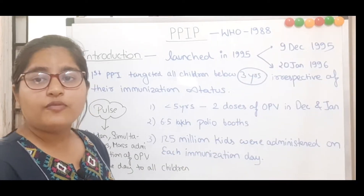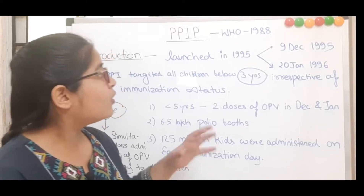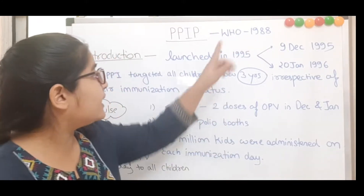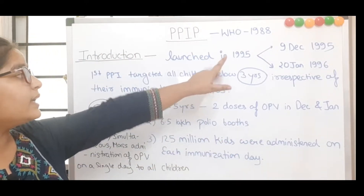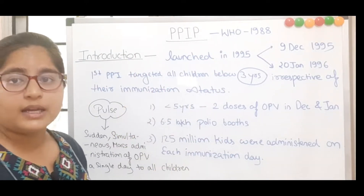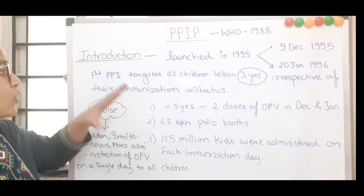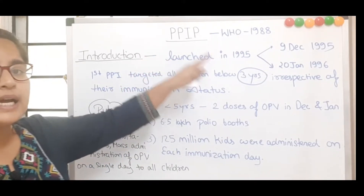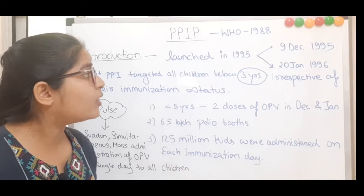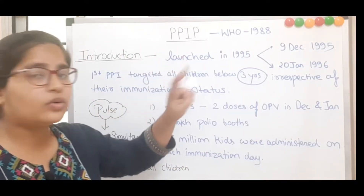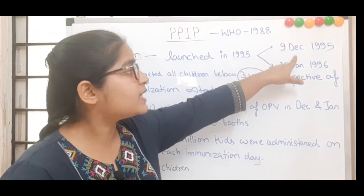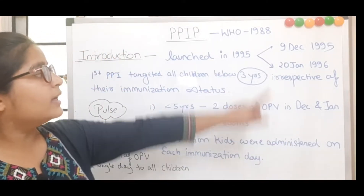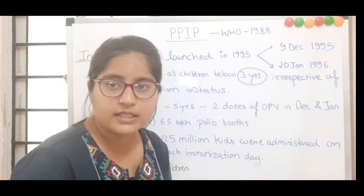The concept of polio eradication was started by WHO in 1988, and after that in 1995 it was launched by the Indian government. In India, PPIP was launched in 1995 in two rounds: first on 9th December 1995, and again after 6 weeks on 20th January 1996.